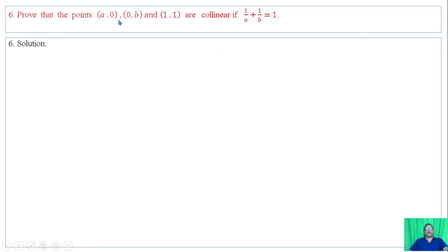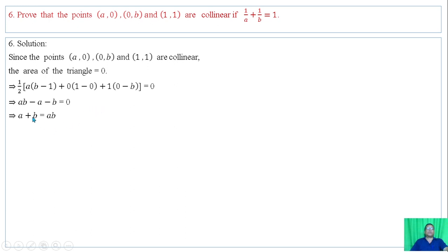Question 6: Prove that the given points are collinear if 1 by a plus 1 by b equals 1 by c. Since the points are collinear, therefore the area of the triangle is zero. Using the formula we have the result. Hence proved.